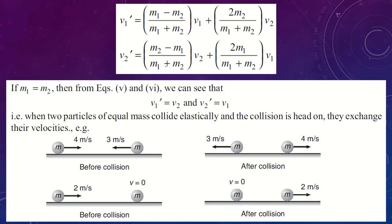To find velocities after collision, we use the elastic collision equations where v1 and v2 are the initial velocities and v1' and v2' are the final velocities. If the masses are the same, the first terms in each equation become zero, and the two balls simply exchange velocities — v1' equals v2 and v2' equals v1.